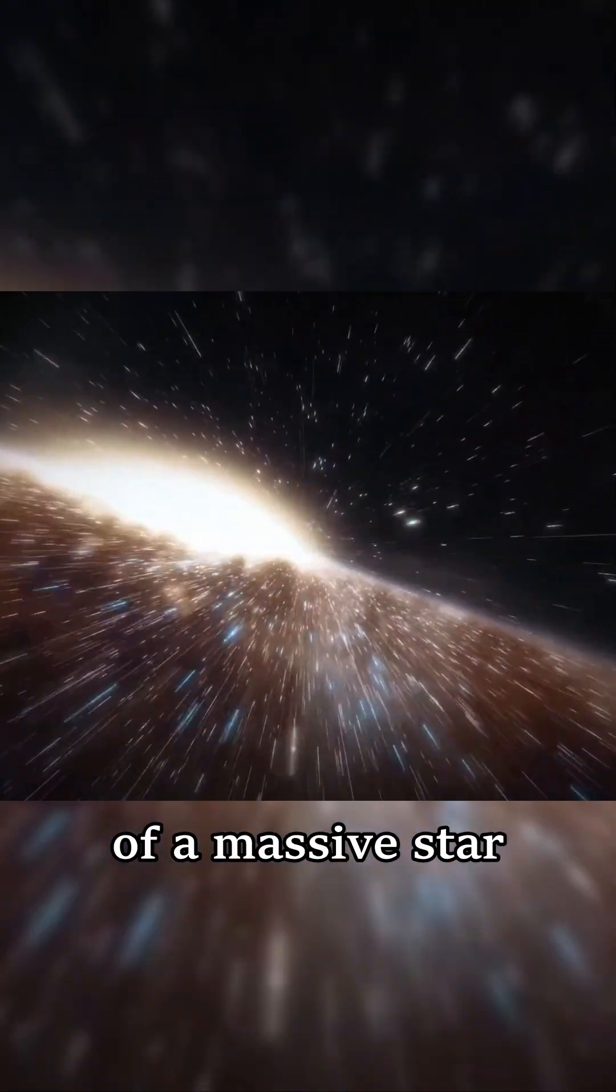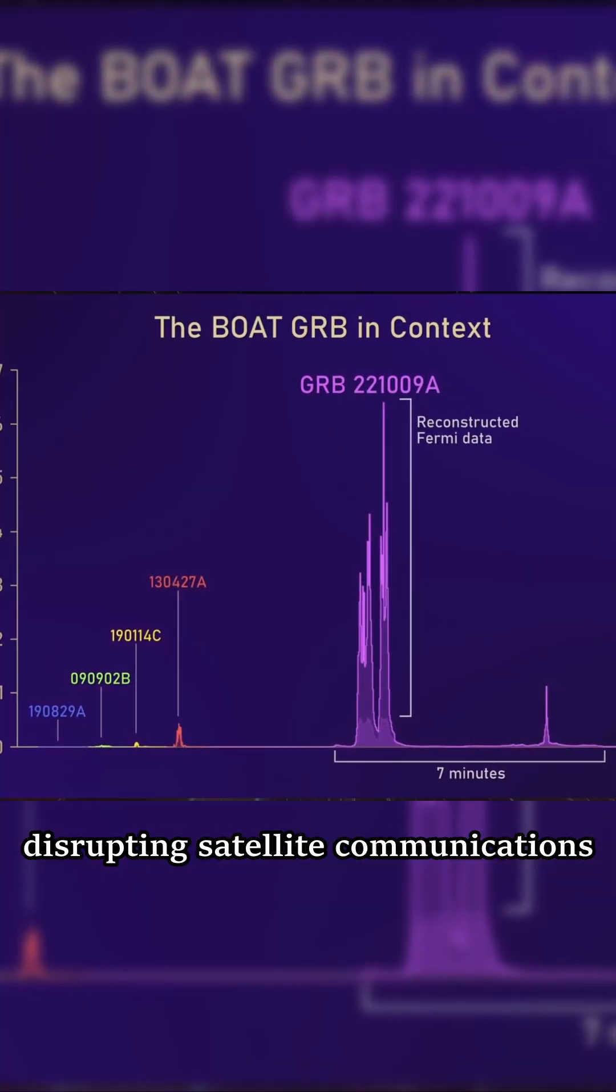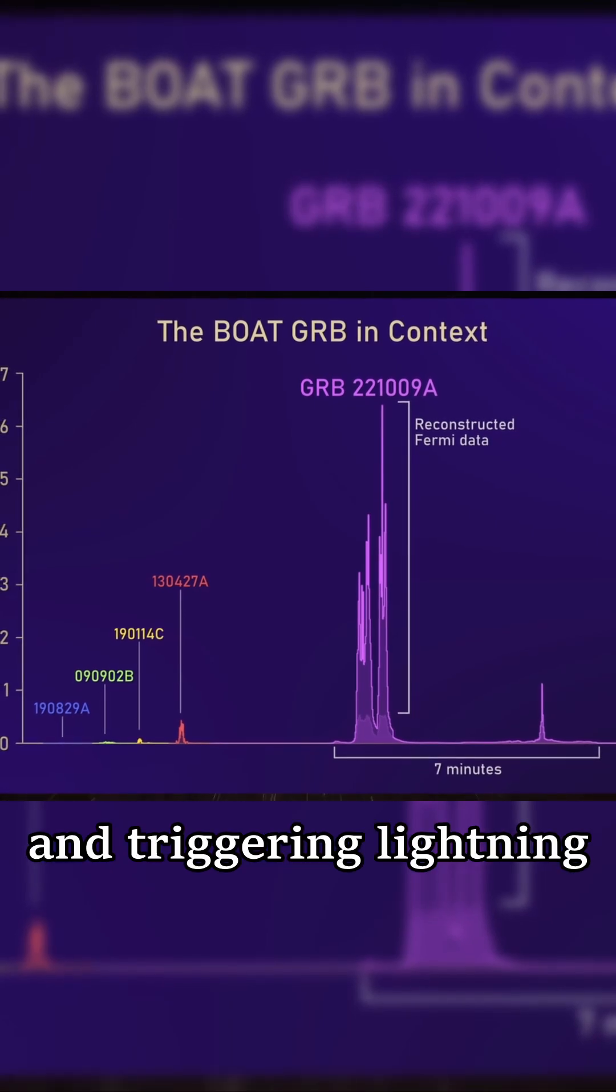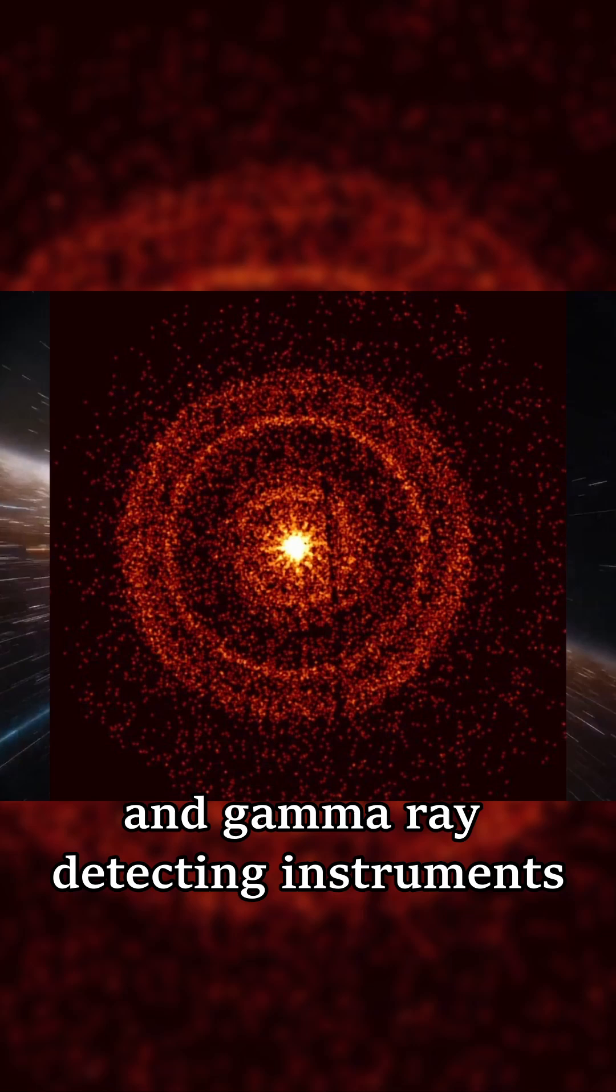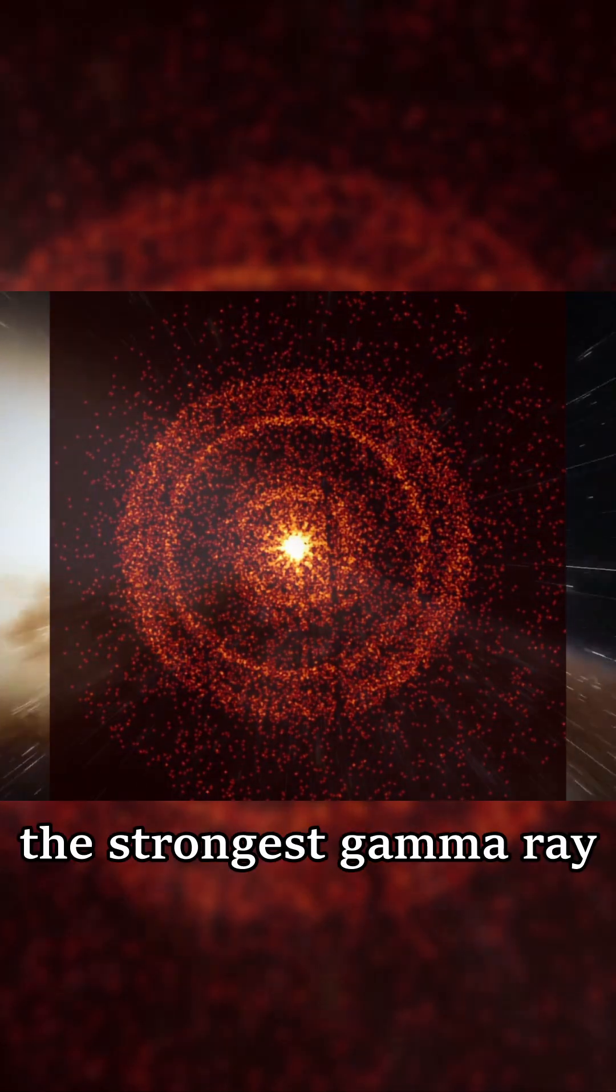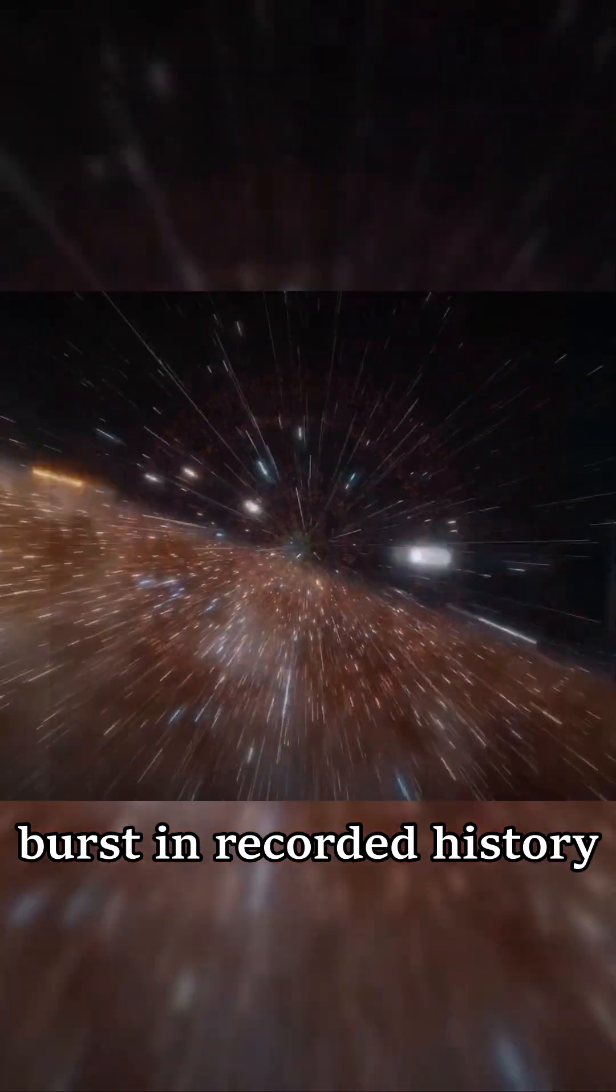Caused by the collapse of a massive star, it impacted Earth's atmosphere, disrupting satellite communications and triggering lightning detectors in India. It was so bright it blinded multiple satellites and gamma-ray detecting instruments, and it was the strongest gamma-ray burst in recorded history.